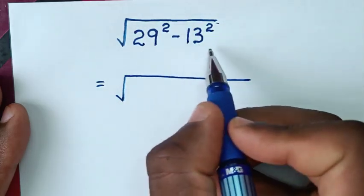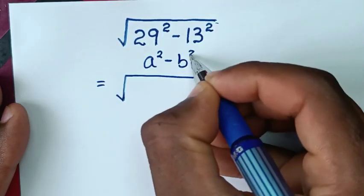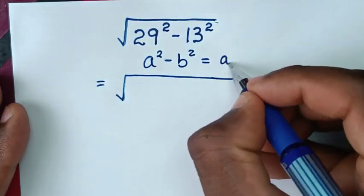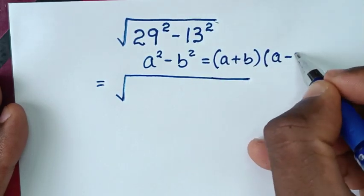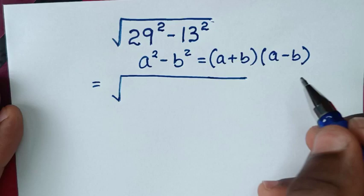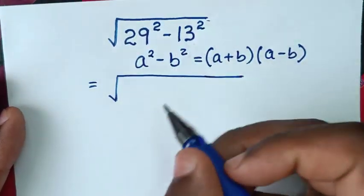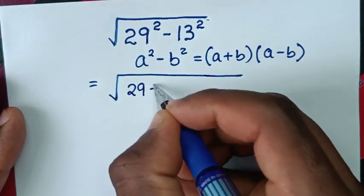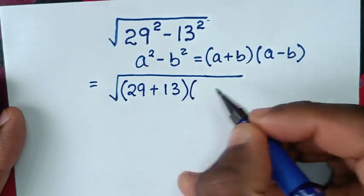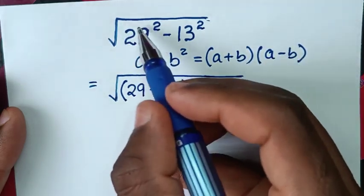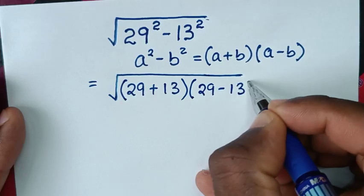We'll apply perfect square rule which is a square minus b square is equal to a plus b bracket, a minus b bracket. Then we'll apply this form of a plus b. It will be this plus this, 29 plus 13 bracket, times bracket a minus b. It will be this minus this, 29 minus 13 bracket.